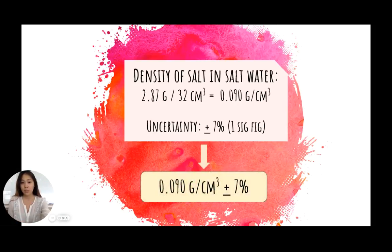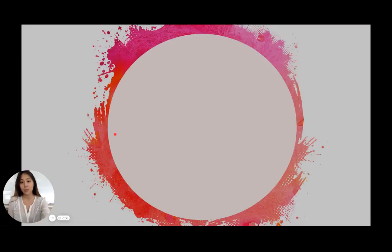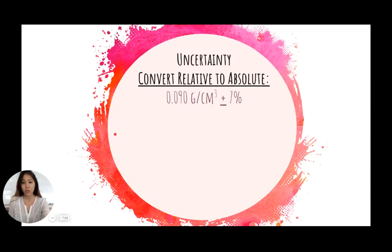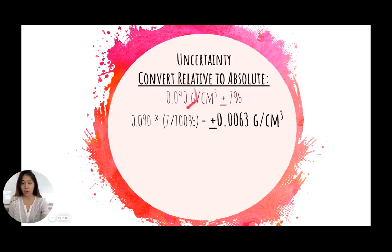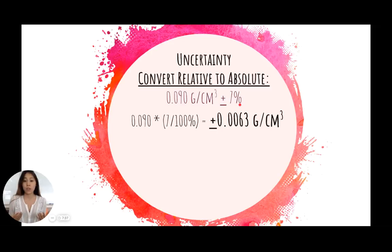So knowing that this is plus or minus 7%, we can go back to the equation we're used to. The uncertainty conversion from relative to absolute involves this equation where we plug in our value as 0.09. Our relative uncertainty is 7%, and because we're converting it back to a number, the 7% needs to be divided by 100%, which gives us a total value of plus or minus 0.0063.